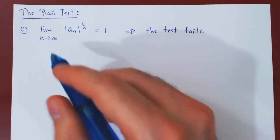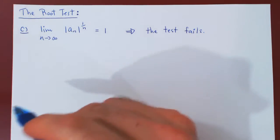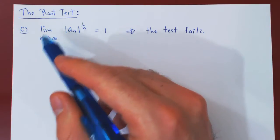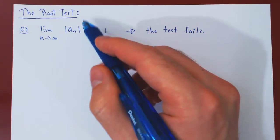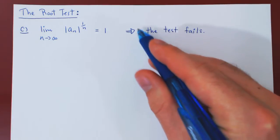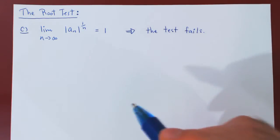Ok, so in this video, we will prove part C of the root test. If you recall, the statement is the following: If the limit as n tends to infinity of the nth root of |a_n| is equal to 1, then the test simply fails.